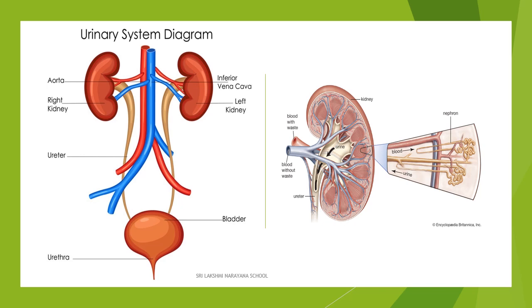Next is the ureter. It connects and carries urine from the kidney to the urinary bladder. The urinary bladder is a temporary storage organ for urine. Urine which comes through the ureter enters the bladder and fills the hollow space inside the bladder.